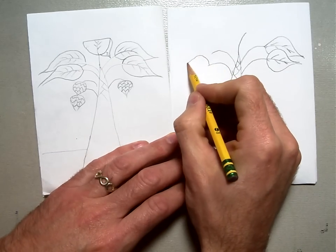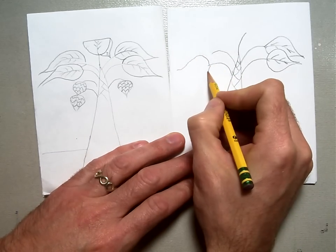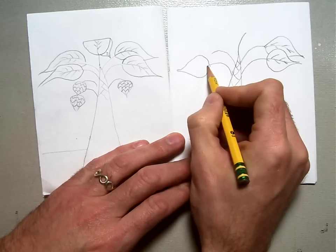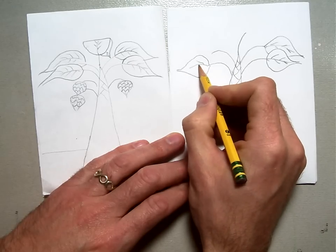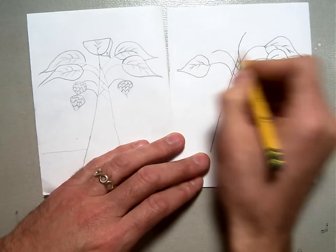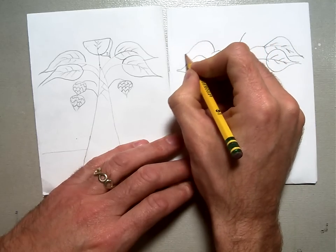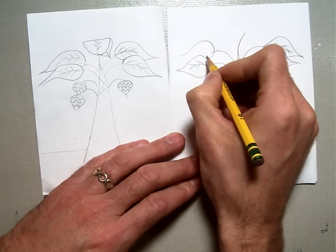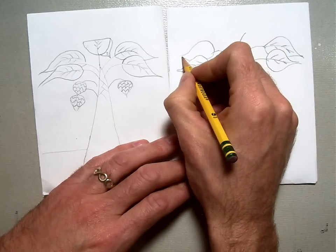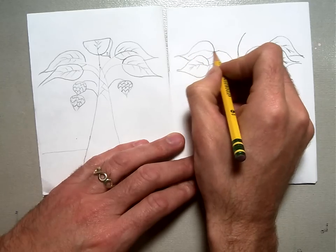Do the same thing on the other side. Curve up, curve down, down and up, put the vein in, staggered pattern. Same thing here, curve up, curve down, curve down, overlap underneath there and put my vein in.